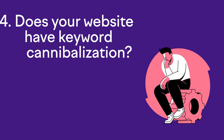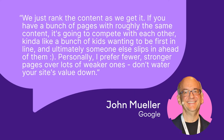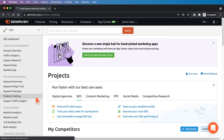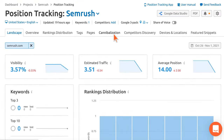The next SEO opportunity is, number four: does your website have keyword cannibalization? Keyword cannibalization is when you have two or more pages targeting the same exact keyword phrase. It's detrimental to your SEO performance because it forces Google to decide which pages are best for the target keyword, and you don't want Google making those decisions. John Mueller, the search advocate at Google, said: 'We just rank the content as we get it. If you have a bunch of pages with roughly the same content, it's going to compete with each other.' The quickest way to identify keyword cannibalization is to use SEMrush's position tracking tool. Go to keyword research, click on position tracking, start a new project, enter your target keywords, and once the scan is complete, open the project and click on the cannibalization tab.